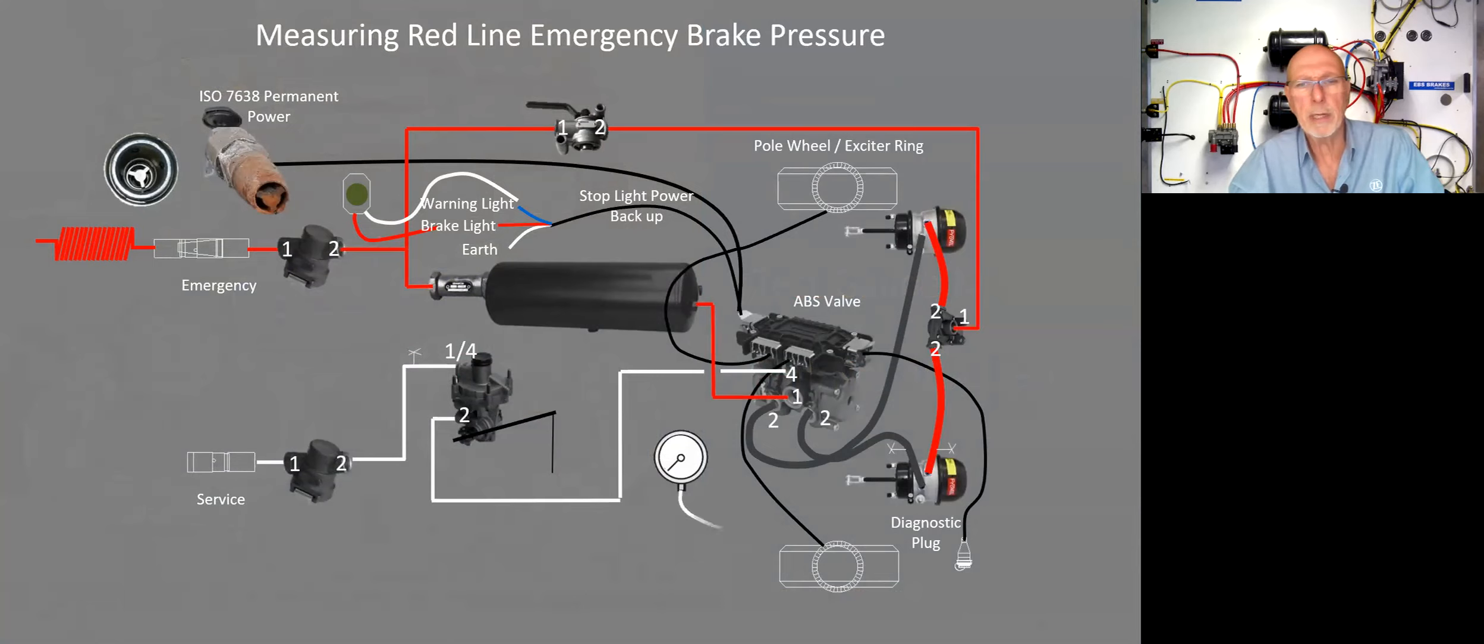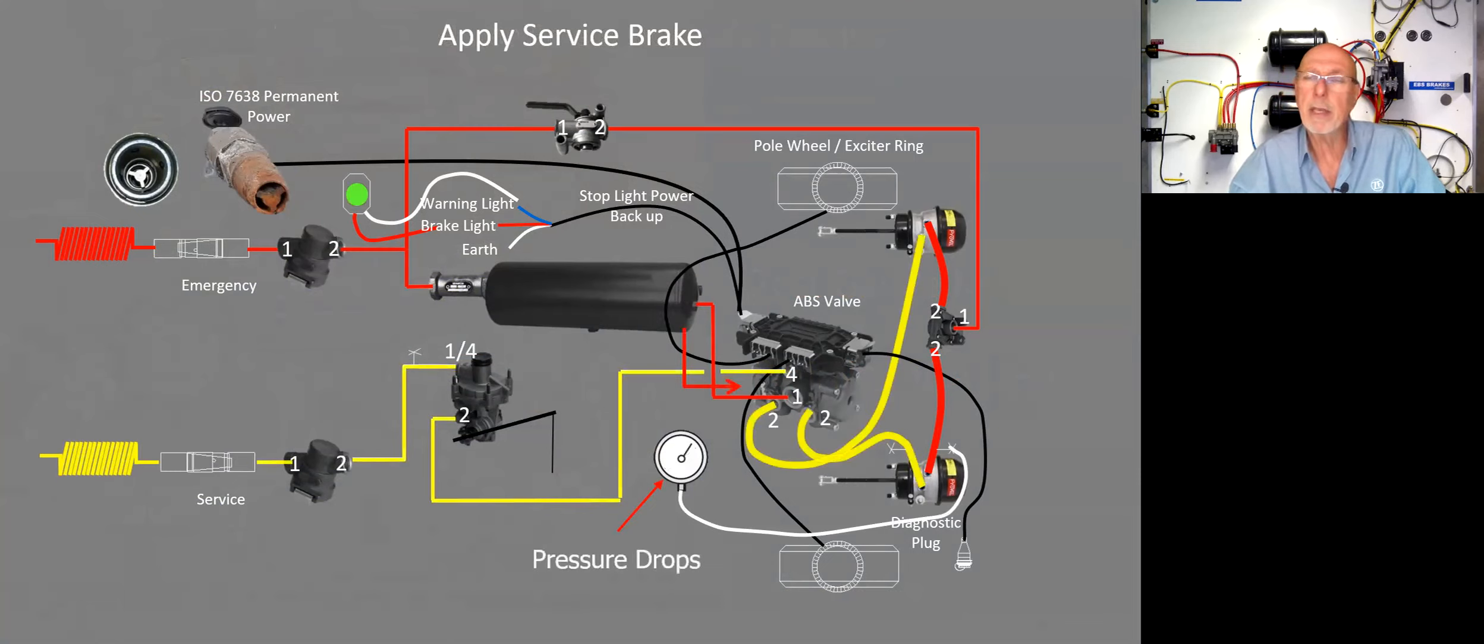Our basic trailer, we now connect our gauge onto the test point, measuring the park brake pressure in the rear of the spring brake. Now, notice what happens on that gauge when we pressurize the yellow line. Notice how the gauge dropped. What's up with that?